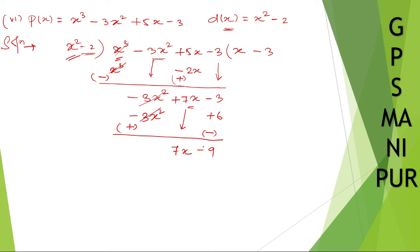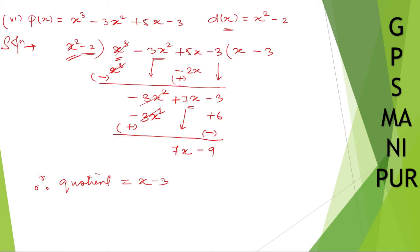Now again x square into how much? We cannot calculate more. Because x square and 7x. 7x is less than x square. So therefore quotient is equal to x minus 3. This one. And remainder is equal to this one. Quotient let me write down q of x. Reminder let me write down r. Which is 7x minus 9.